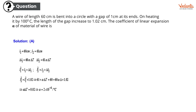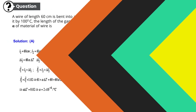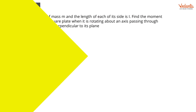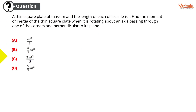Going on to question number 10 now. A thin square plate of mass M and the length of each of its sides is L. Find the moment of inertia.